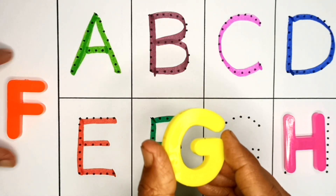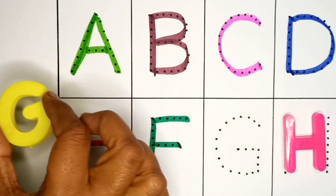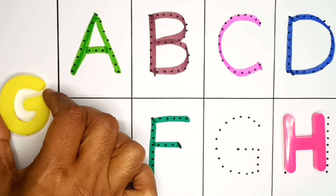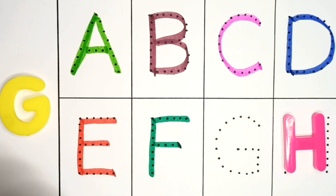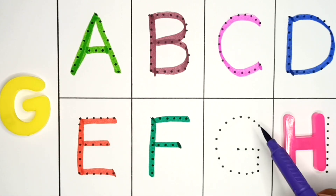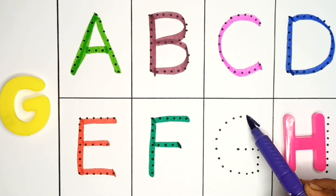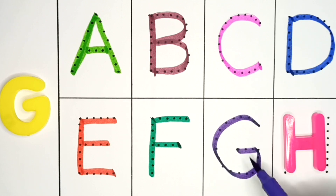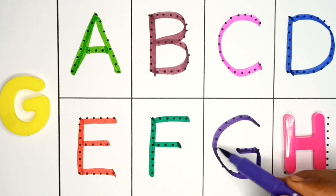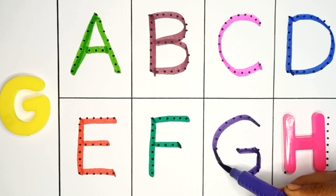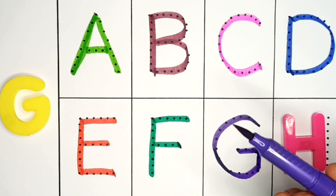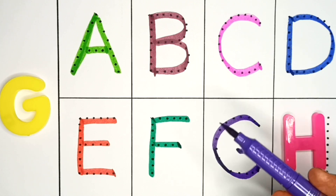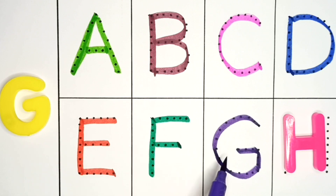G. Yellow colour. G, G for Grapes. Violet colour. G.